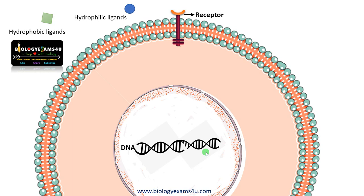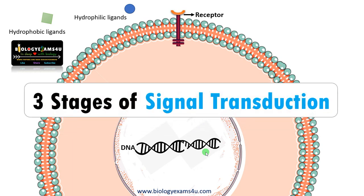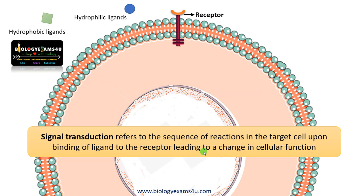Hi friends, hope you are fine. In the last video we discussed about six types of ligands or signaling molecules. In this video let us understand three stages of signal transduction. Let's begin with the definition.